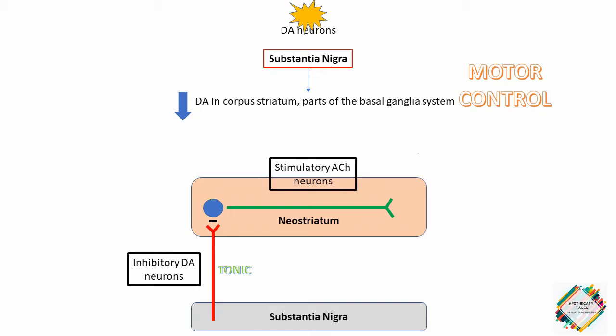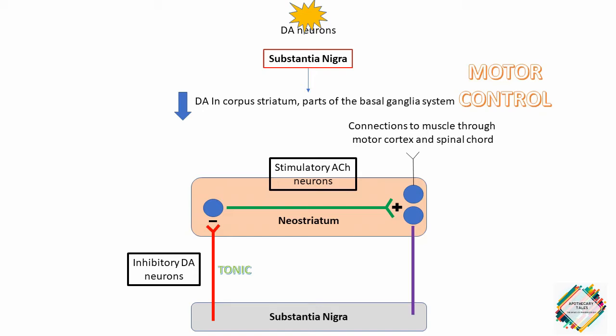Talking about the neostriatum, normally it is connected to the substantia nigra by neurons that secrete the inhibitory transmitter GABA at their terminals, and in turn the cells of the substantia nigra send neurons back to the neostriatum, secreting the inhibitory transmitter dopamine at their terminals. So there is a mutual inhibitory pathway that maintains a degree of inhibition of both areas.